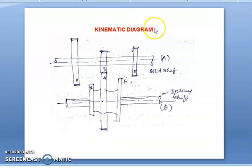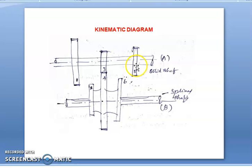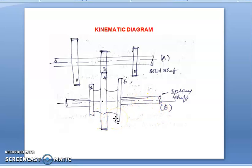This shows the kinematic arrangement of the gearbox. The gearbox contains many gears of different numbers of teeth arranged on different shafts, which may be a solid shaft or a splined shaft. On a solid shaft, the gears are fitted such that they can rotate only and cannot move in the axial direction, with some gap provided between the two gears. On a splined shaft, two or three gears already meshed together act as a single unit and are fitted so that they can both rotate and move in the axial direction.